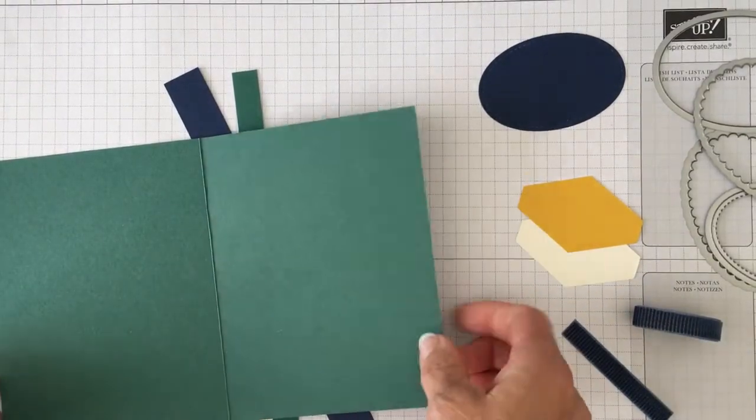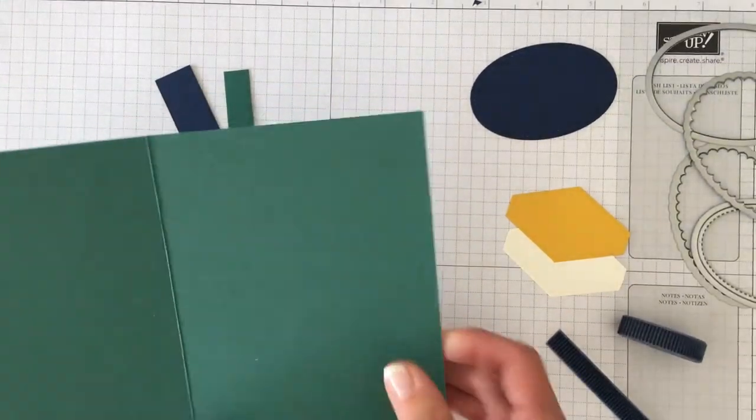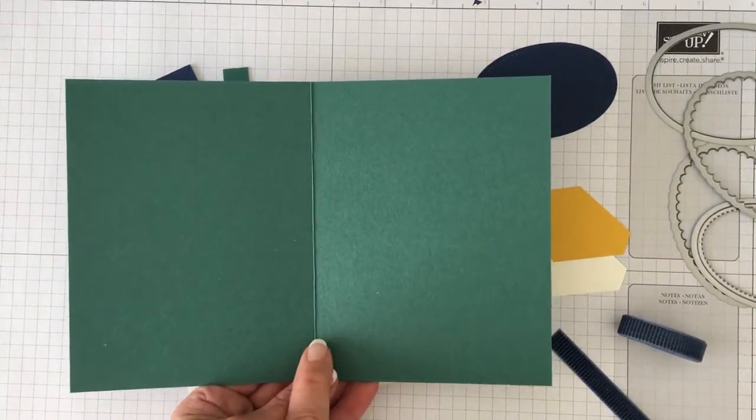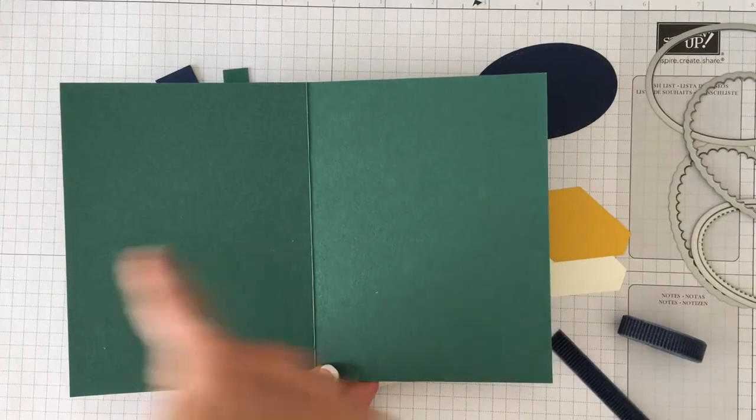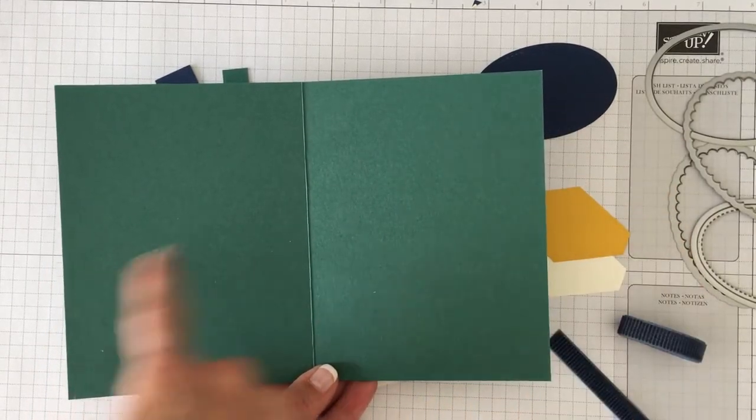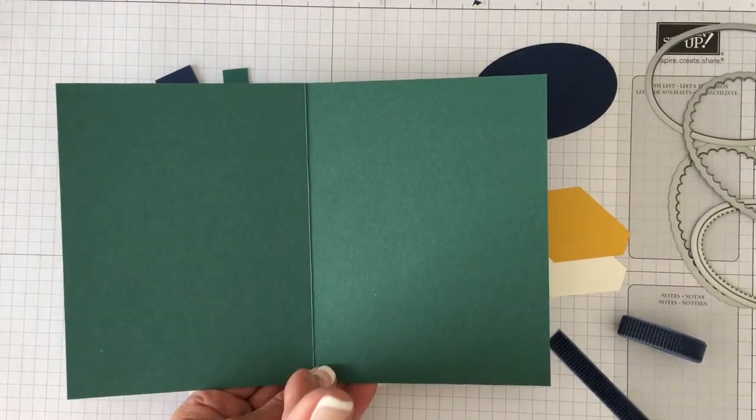So to start out I'm going to make a new card and what I'm going to do is I'm going to be using colors found in the designer series paper. So this is tranquil tide and it's five and a half by eight and a half, so a half a sheet of your cardstock, five and a half by eight and a half and we'll score it at four and a quarter.